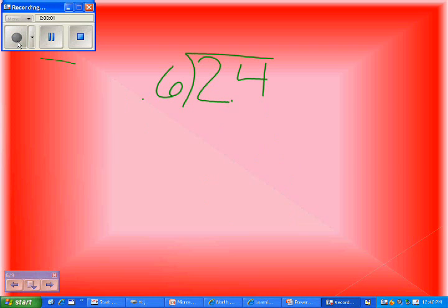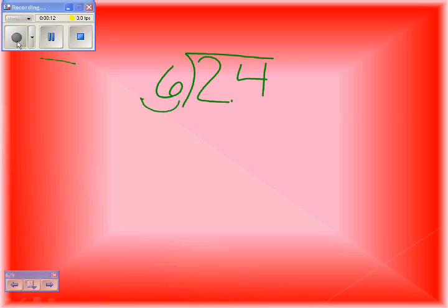Our last example is 2.4 divided by 0.6. First, we'll move the decimal on 0.6 over to the line to make it a whole number. Then, you move the decimal in 2.4 the same amount of spaces.